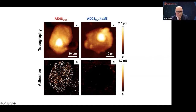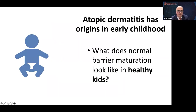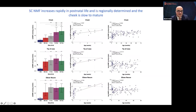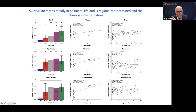All of this is accentuated in a type 2 environment — type 2 cytokines make filaggrin deficiency worse and make it easier for S. aureus to grow. What does normal barrier maturation look like in kids? It takes a long time to mature. Looking at stratum corneum natural moisturising factor in children under 48 hours, up to 4 weeks, up to a year, up to 3 years, and 3 to 6 years, we see that the cheek takes between 3 and 6 years to reach barrier maturity — in contrast to the tip of the nose and elbow flexors, which mature by about a year.